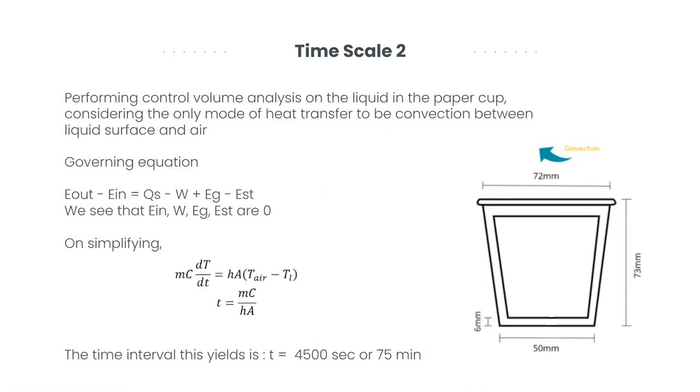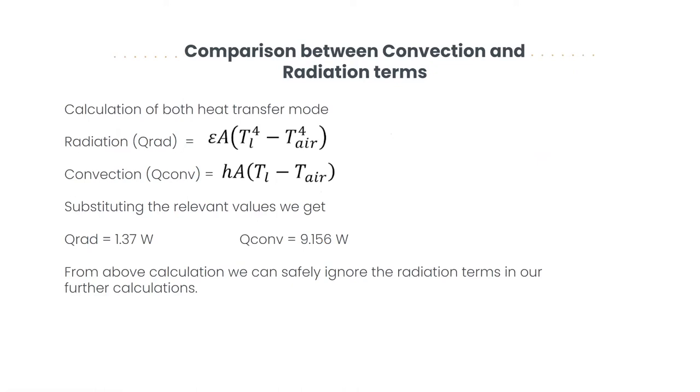For the second timescale, the liquid in the cup is considered as the control volume and then the energy equation is written. We find this timescale to be around 75 minutes, which is very large when compared to the first timescale. Also in this timescale, we considered the convection and neglected the radiation term between the liquid surface and the air, as the radiation rate was found to be very small when compared to the convection. As you can see, the second timescale was very large compared to the first timescale, so for our time interval of interest, we took the temperature of the fluid to be constant.